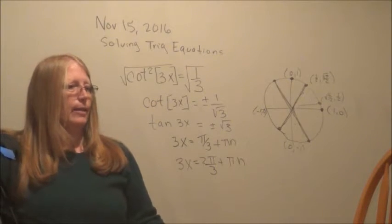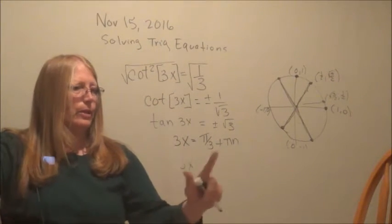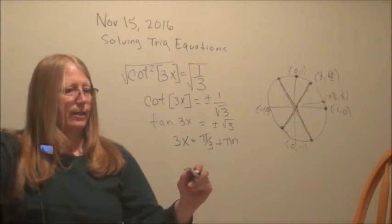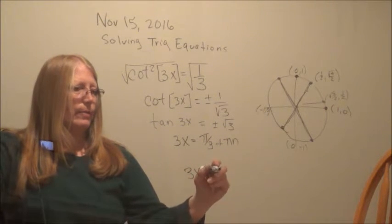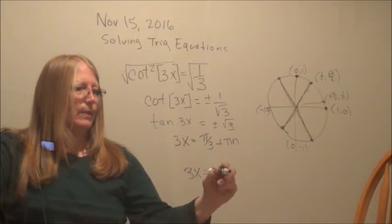But I'm not done. So 3x equals pi over 3 plus pi n, and 3x equals 2 pi over 3 plus pi n.